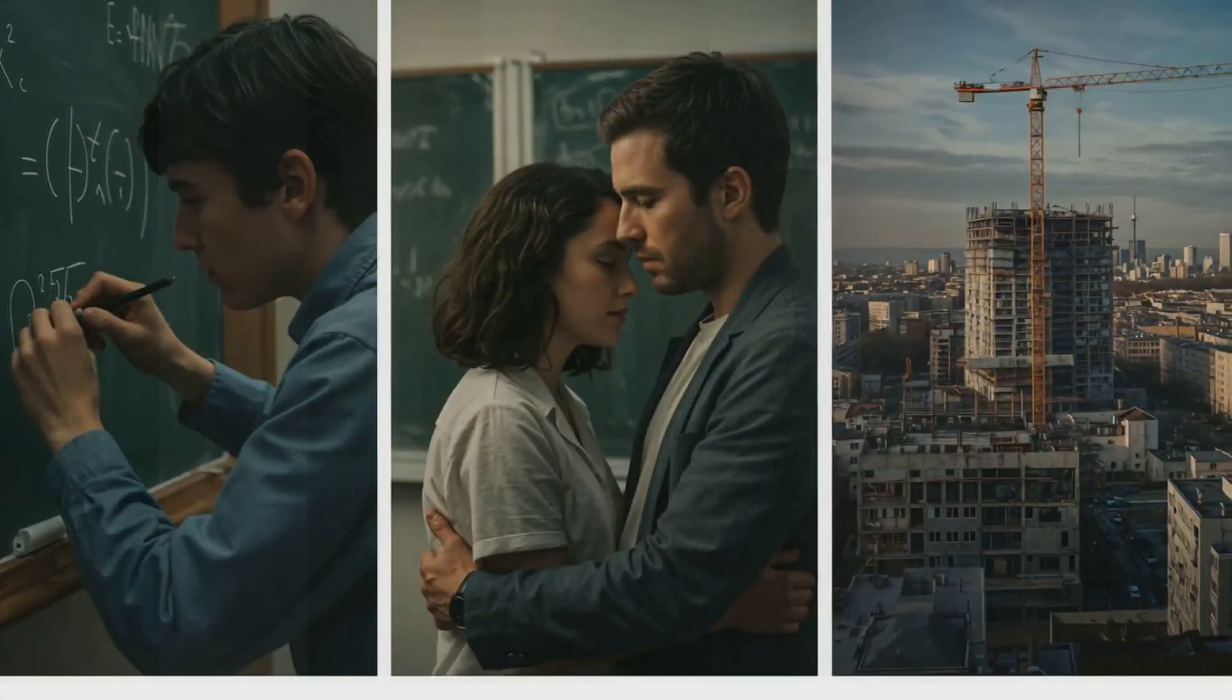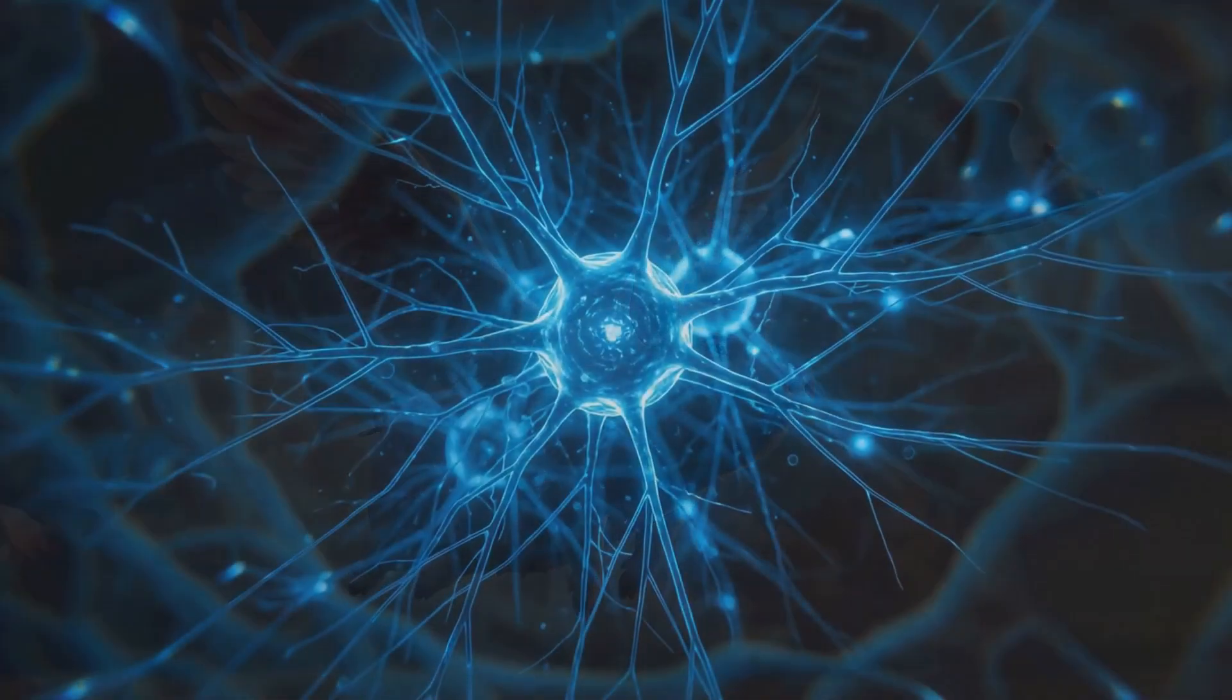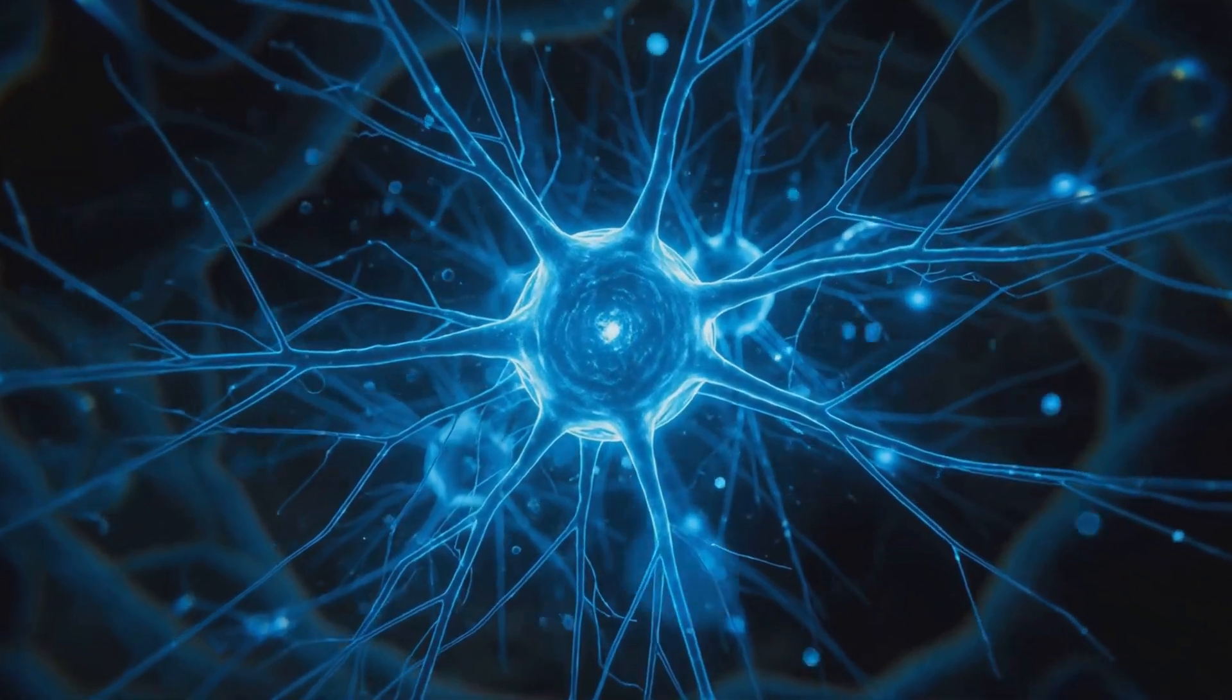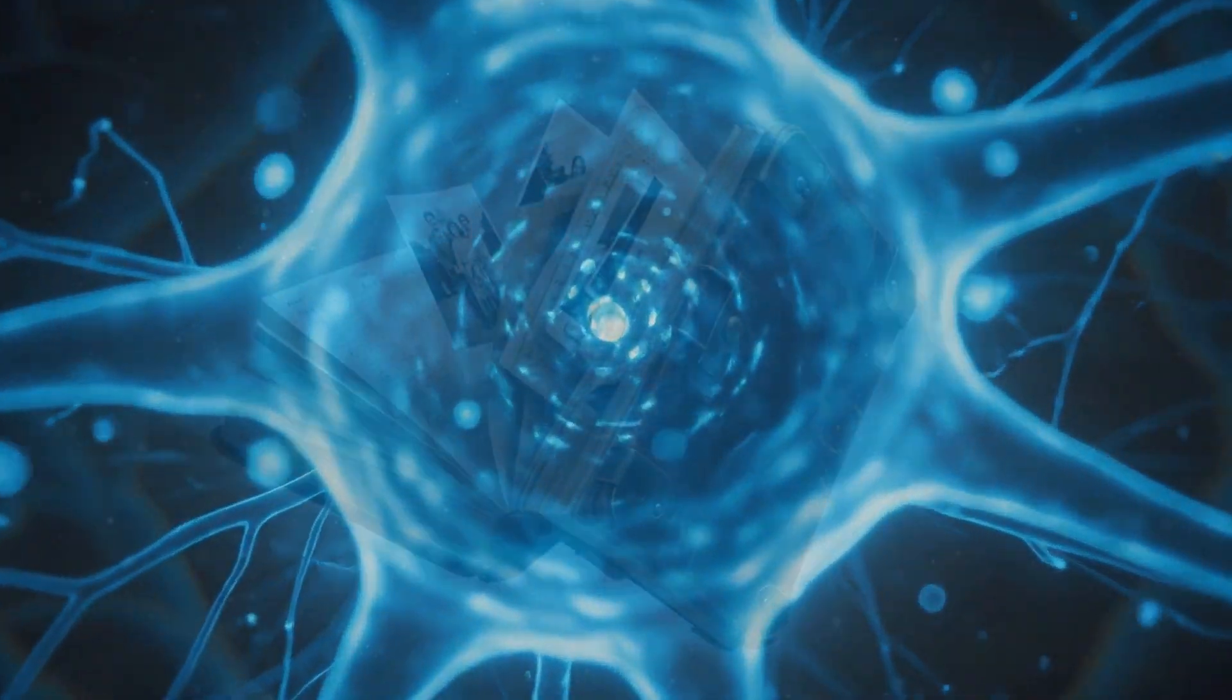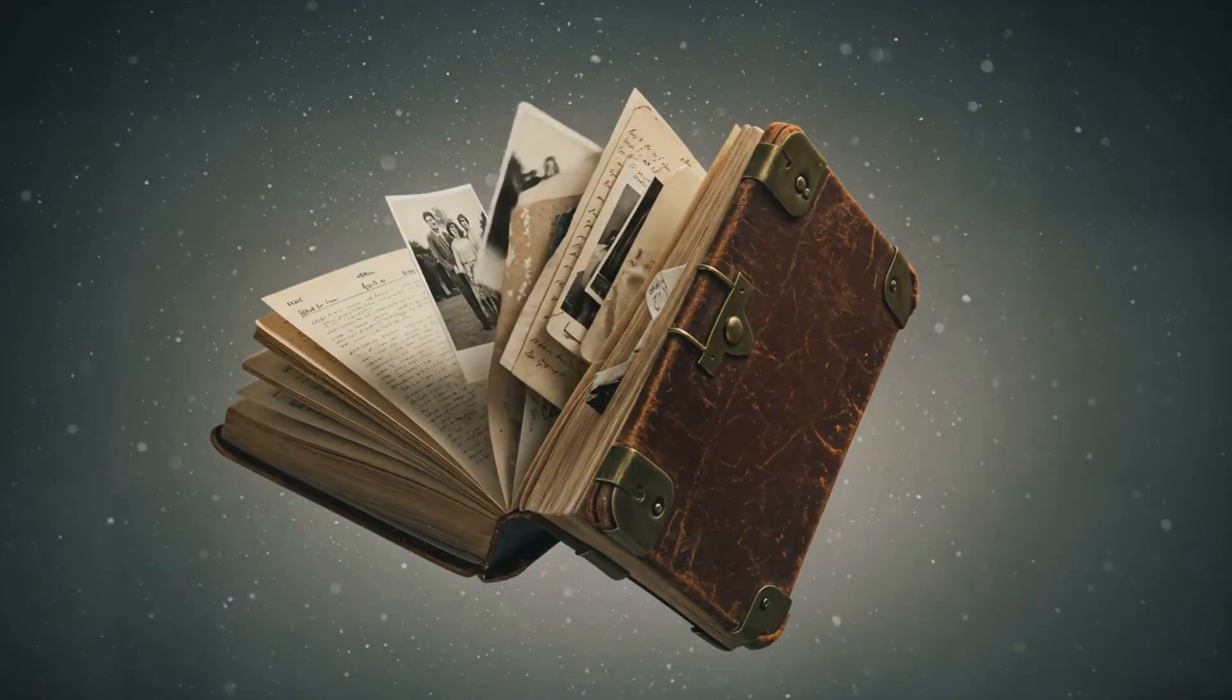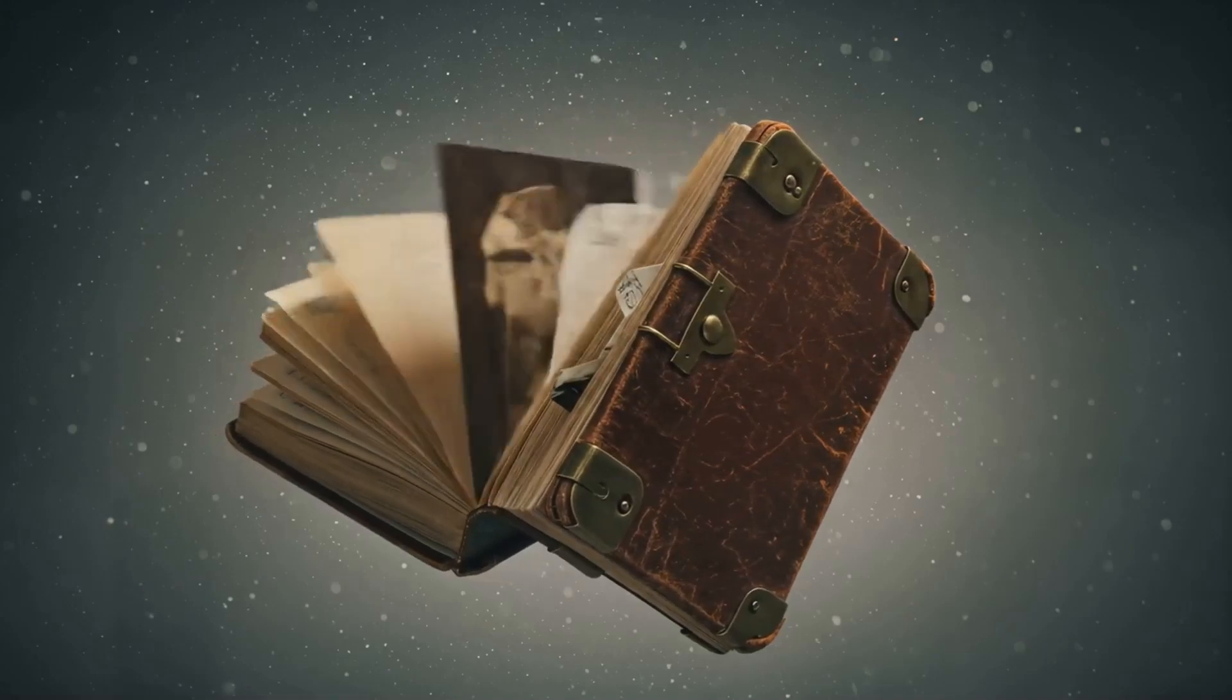You might think your brain records memories like a video camera, but it doesn't. Instead, memory is more like a scrapbook. Each time you remember something, you're not replaying it, you're rewriting it. You change a detail here, forget a piece there, and sometimes you just make stuff up.